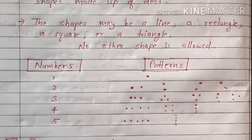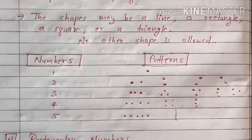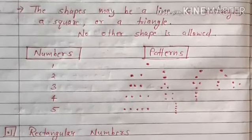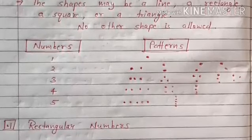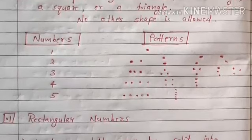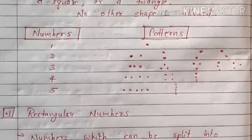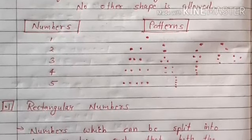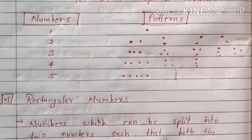1 को हम एक single dot से represent कर सकते हैं। 2 को हम four types से — vertical, horizontal, और diagonally — बता सकते हैं। 3 को भी four types से दिखा सकते हैं: three dots vertical, या three dots एक triangle की रूप में। 4 को तीन तरीके से और 5 को दो तरीके से denote कर सकते हैं।